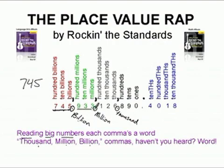Then 933 — what's this comma? Million. Then 126, and we come to a comma and say the next word, thousand. Then we just say that number, 890.